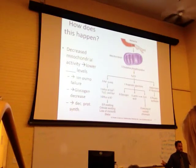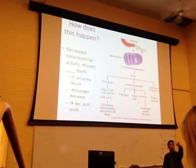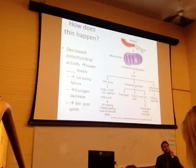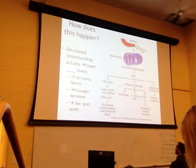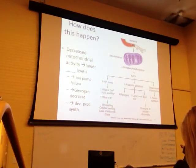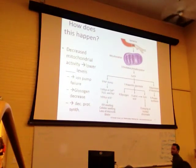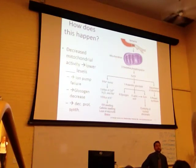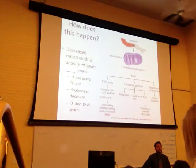The ribosomal detachment is dependent upon adequate ATP production. When ATP drops, ribosomes detach from the ER, leading to swelling of the endoplasmic reticulum as well. The swelling that takes place is throughout the entire cell.